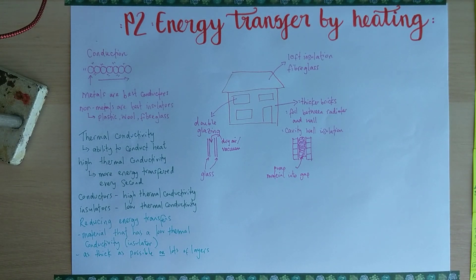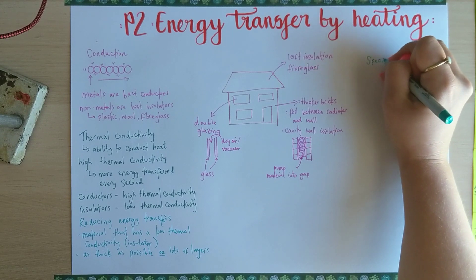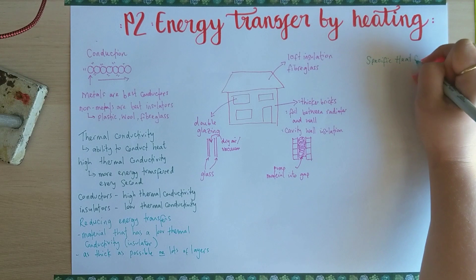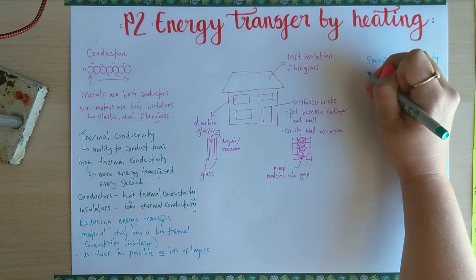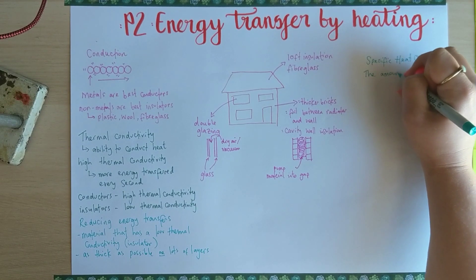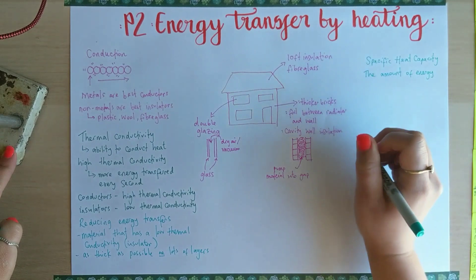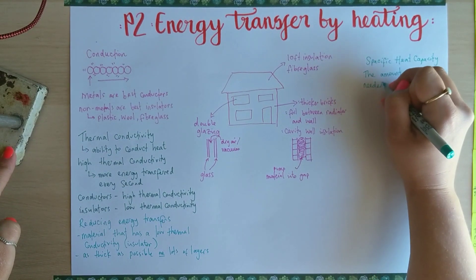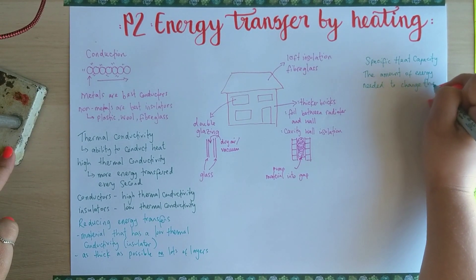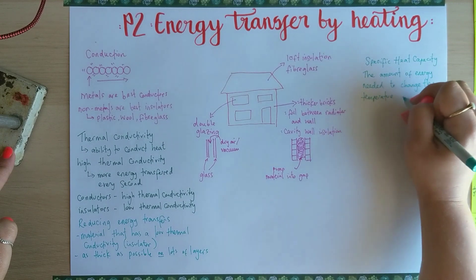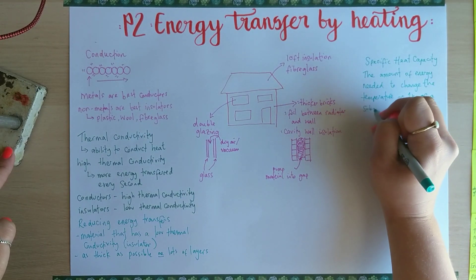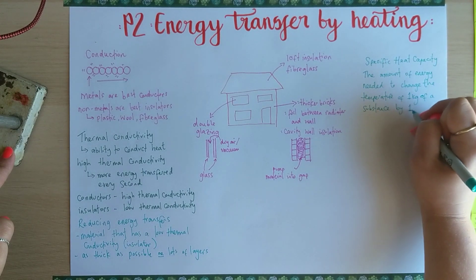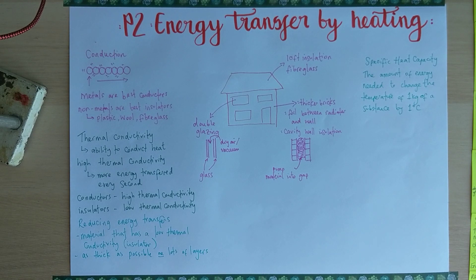The last bit of this topic is specific heat capacity. There's another video with more detail, but here's a summary. You need to know the definition: specific heat capacity is the amount of energy needed to change the temperature of one kilogram of a substance by one degree Celsius.